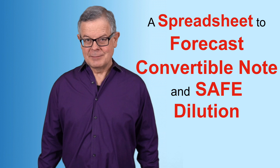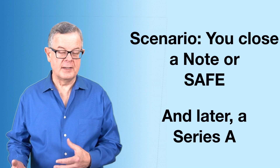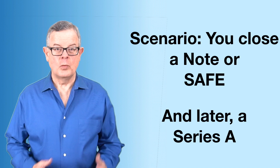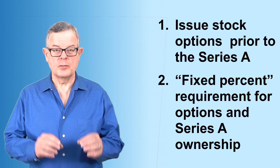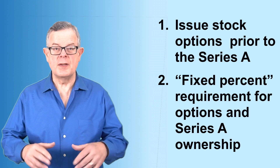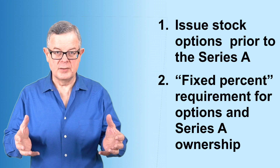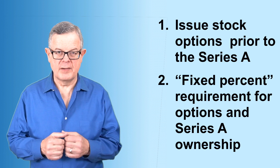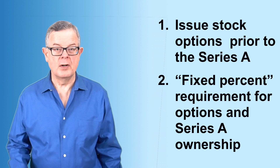The scenario is you've closed a note or a safe for some current funding, and later you have a Series A funding that converts that convertible security into stock. We'll walk through two different situations. In one, the Series A investor requires additional stock options prior to the investment, then converts — diluting both the Series A and the founders. That's a reasonably balanced and very typical approach.